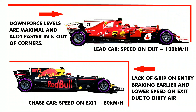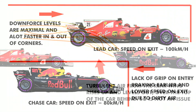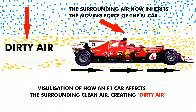This is, in a nutshell, what dirty air is and how it affects cars out on track. Here we have the lead car — the Ferrari — passing through the air, creating dirty air that the following car has to drive into. It has less overall grip, meaning it can't go as fast, meaning overtakes are harder to complete.